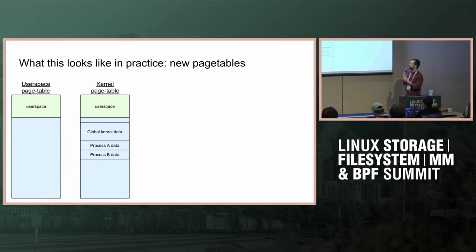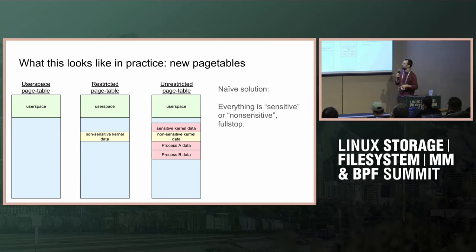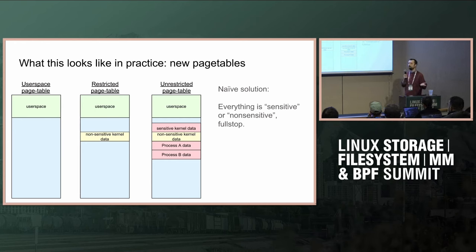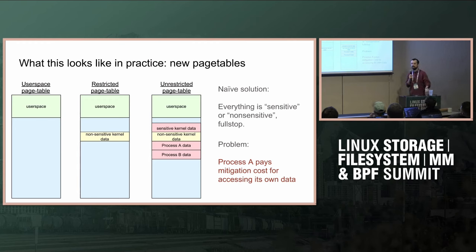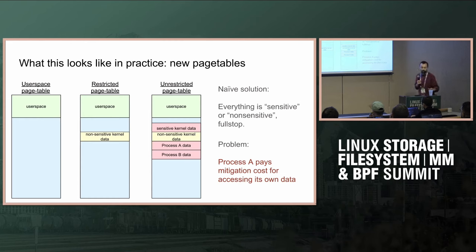Let's look at some page tables. With KPTI, there are two page tables per process per mm. ASI adds a third one in between them that has more data than the user space page table but less data than the kernel page table — now called the unrestricted page table. So now you have three page tables per process, unless you switch off KPTI. This is a bit naive though: imagine you're process A. There's data which, as the kernel, we don't care if process A leaks to itself — we just don't want process B to leak it. But in this picture, process A's data isn't mapped when we're servicing a syscall for process A, so process A is paying a mitigation cost to protect itself from itself.